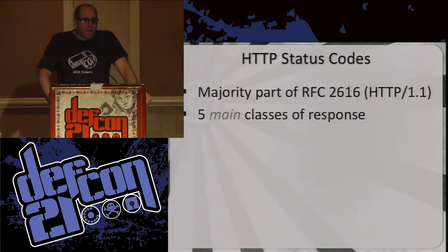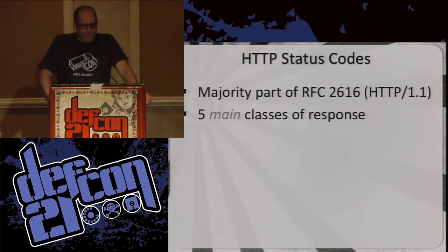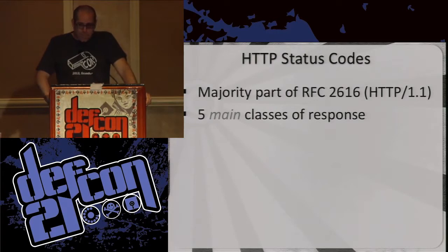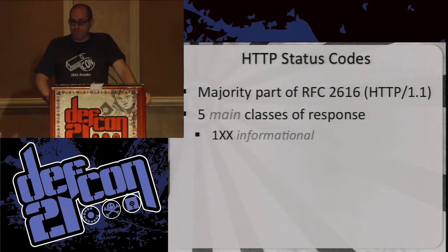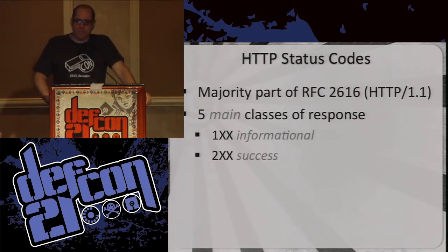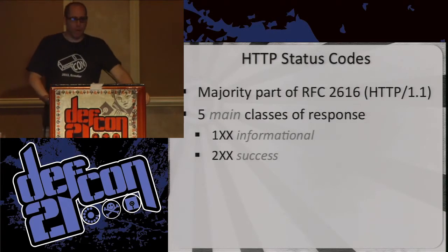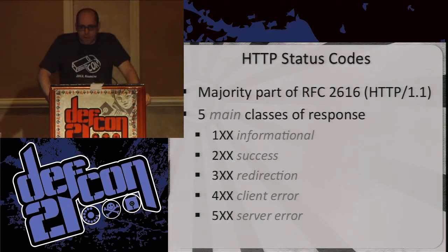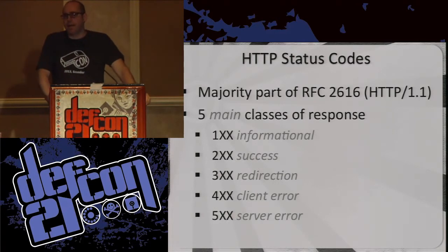A little bit of history on HTTP status codes — there's an RFC. There's five main classes of responses: you get the 100s, which is the informational stuff you don't see very much; the 200s, which is mostly success — your web page is here, here is the content; the 300s, which is the redirect stuff; the 400s, which means you fucked up; and the 500s, which means they fucked up. Simple as that.